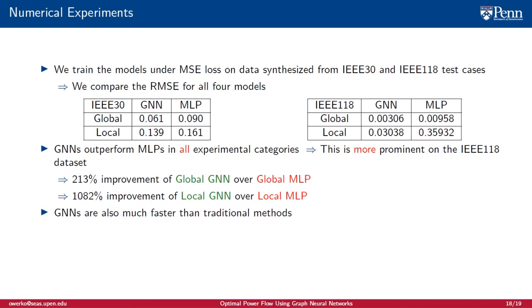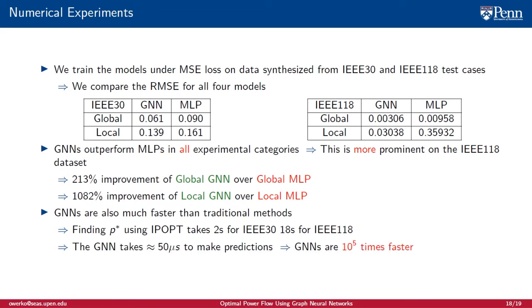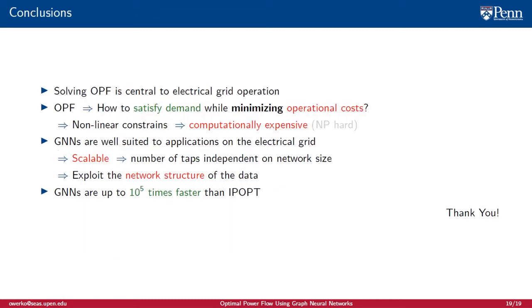We also observe that GNNs are much faster than traditional methods. Finding the optimal solution using IPOPT takes 18 seconds on the IEEE 118 dataset. The GNNs take 50 microseconds to make predictions. An improvement of five orders of magnitude.